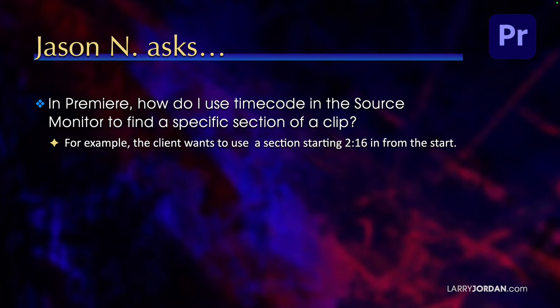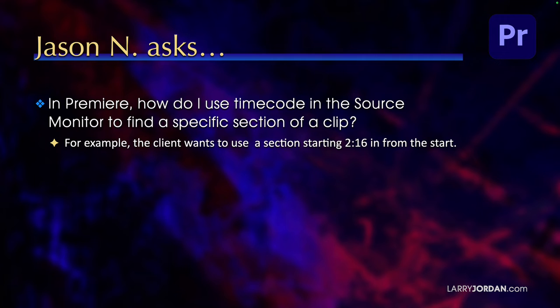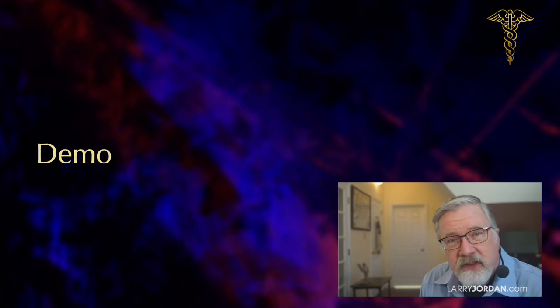In Premiere, how do I use timecode in the source monitor to find a specific section of a clip? For example, the client wants to use a section starting at 2 minutes and 16 seconds in from the start.